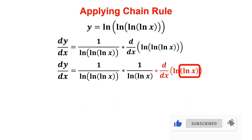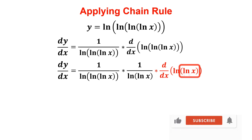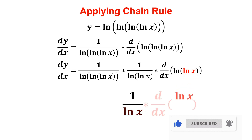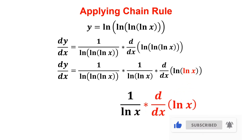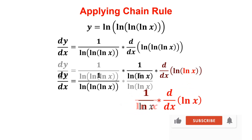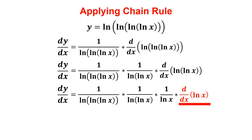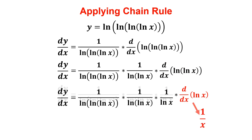Taking the derivative of the outer function without changing the inner function, we get 1 over ln x. We then multiply by the derivative of the inner function, which is ln x. The derivative of ln x is simply 1 over x.